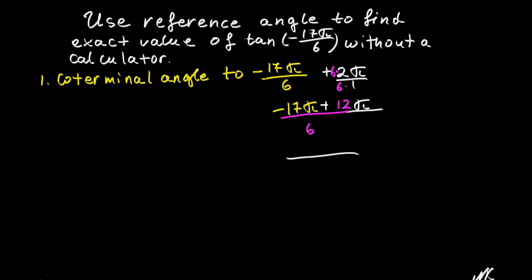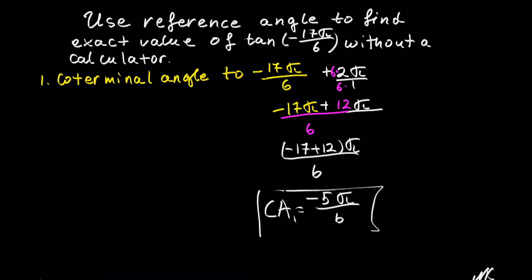And we get out of 6: negative 17 from the first pi, plus 12 from the second pi. So negative 17 plus 12 of pi. Different signs, you look for the difference, and the difference between 17 and 12 is 5. We have more negatives, so it's negative 5 pi out of 6. So this is the first coterminal angle, which is negative 5 pi out of 6.